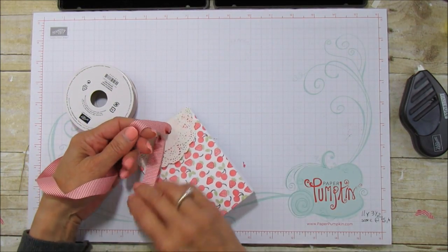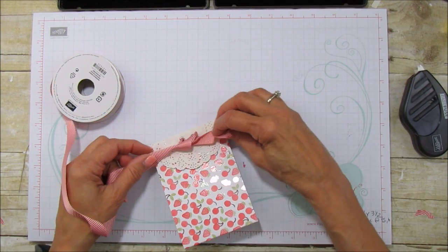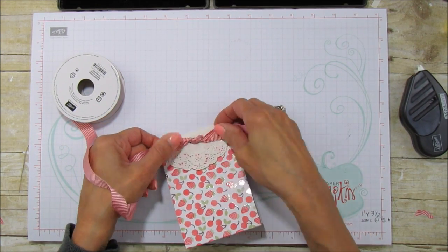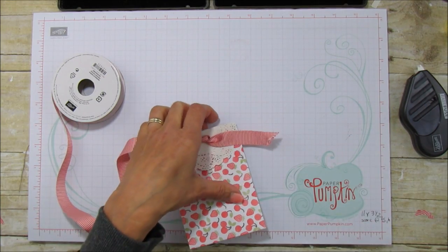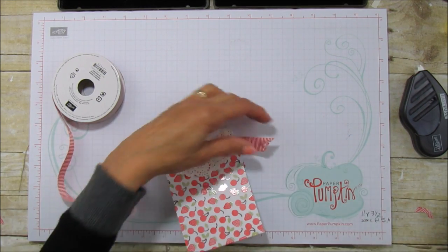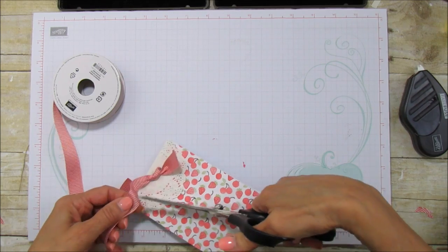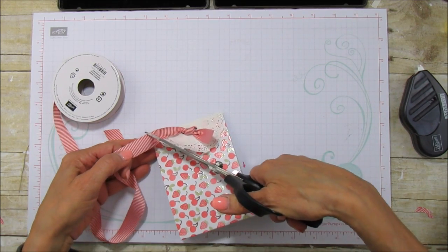And we're just going to tie a knot. I love this mini striped ribbon. It's really pretty. And we had quite a few. We had like three or four colors, I think, in it. And then I'm just going to grab my ribbon scissors here and cut it at an angle so it looks like a little bow.